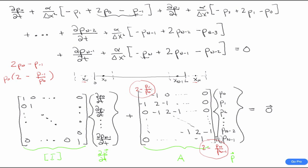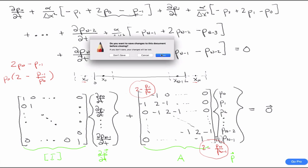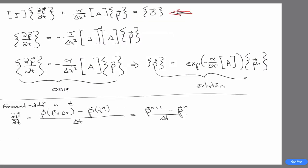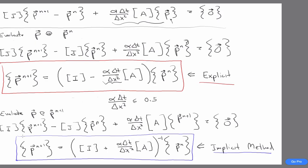What we have to do is apply boundary conditions on those edges and then use those boundary conditions to eliminate the fake pressures that are outside the grid. So let's look at a couple of different boundary conditions and how they modify the resulting equations.